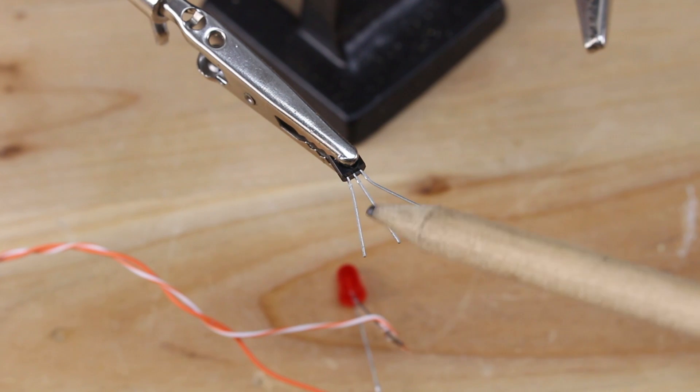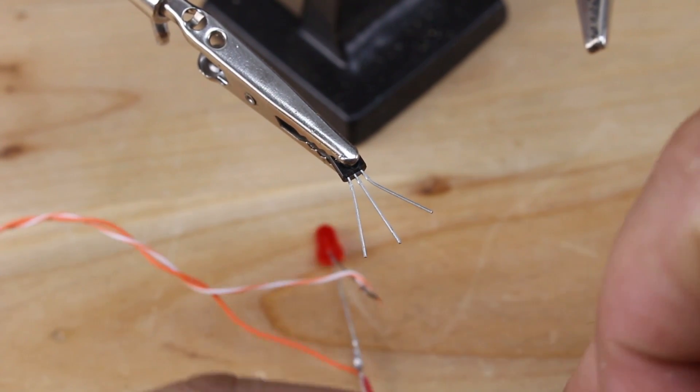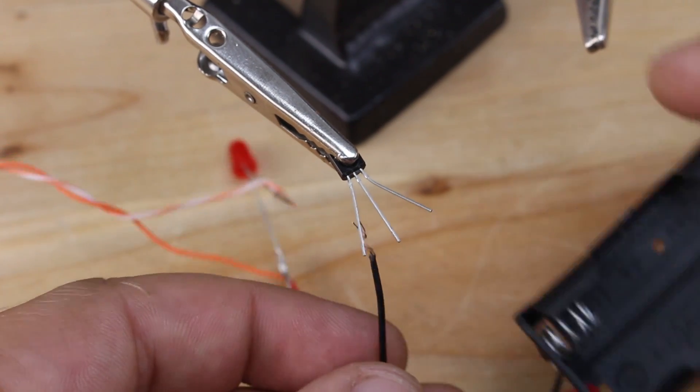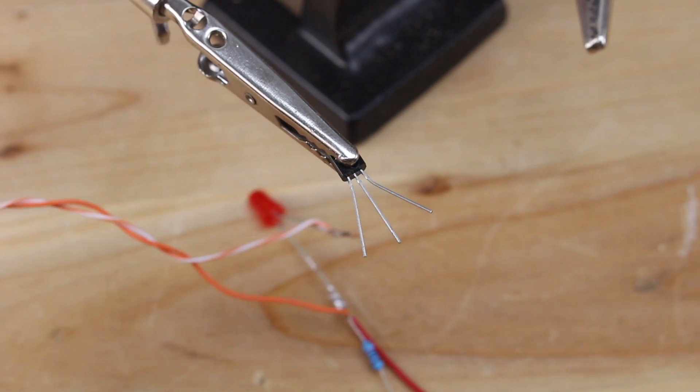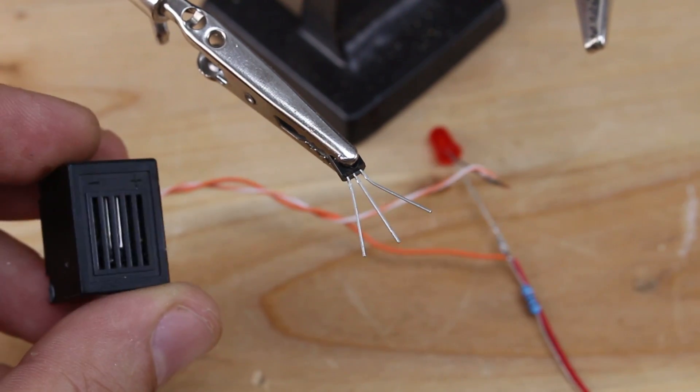The transistor pinout is collector, base, emitter. On emitter we're gonna solder the negative wire from battery holder. On collector we're gonna solder the negative wire from the buzzer.